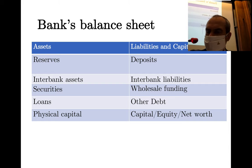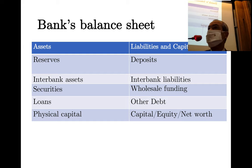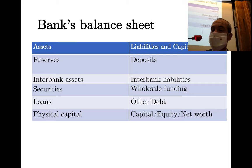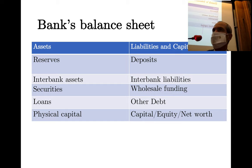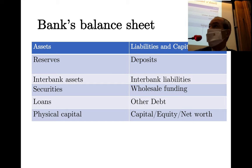On the liability side, there are different ways of financing a bank. On the asset side, you're not just providing loans — you need physical capital like buildings or servers. Your assets can also be invested in securities, interbank assets by lending to other banks, or stored as cash reserves with the central bank.